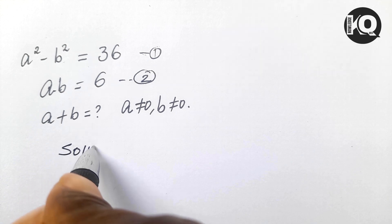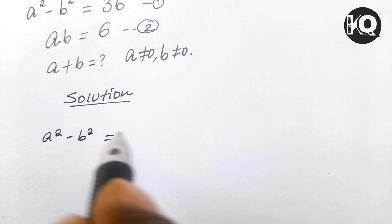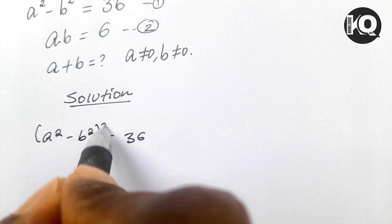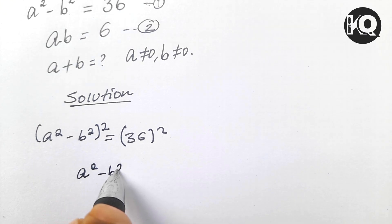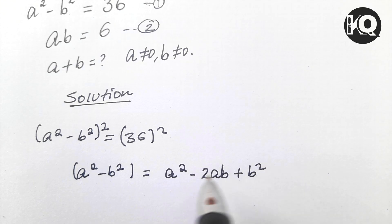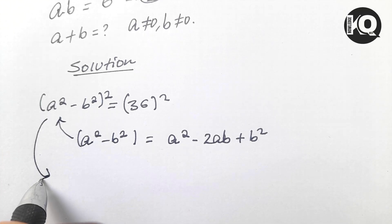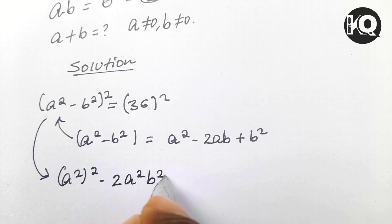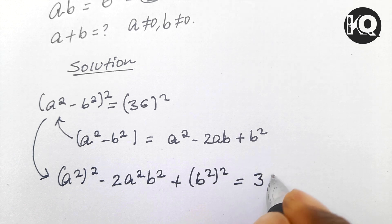From equation 1 we have a² - b² = 36. The first step to solve this problem is to square both sides. We know from algebraic expression that (a² - b²)² is equal to a⁴ - 2·a²b² + b⁴, and the right side becomes 36².